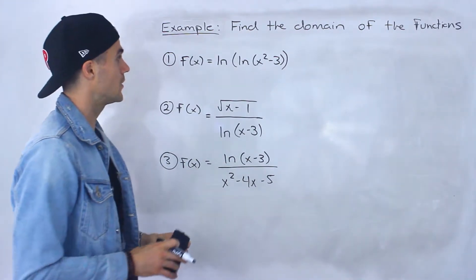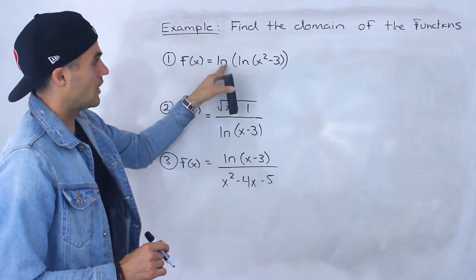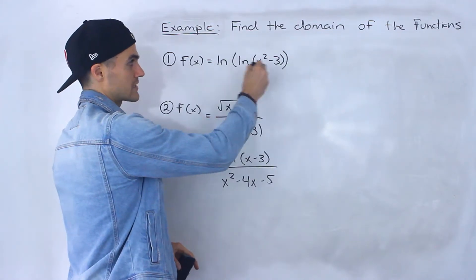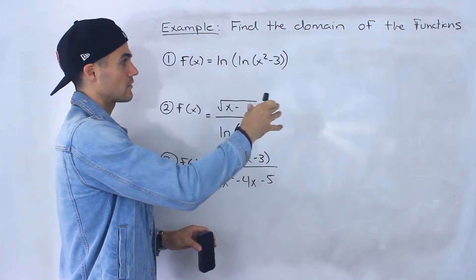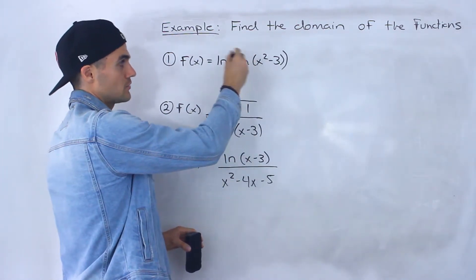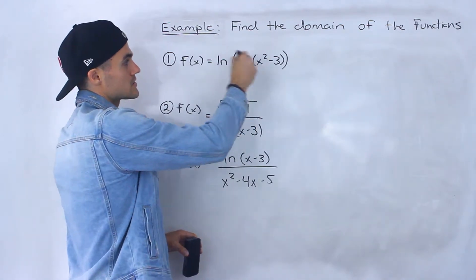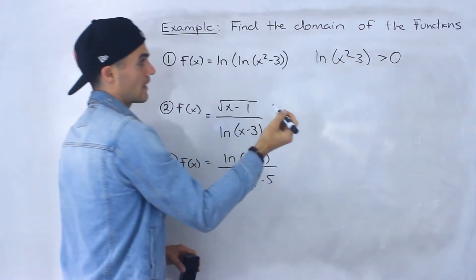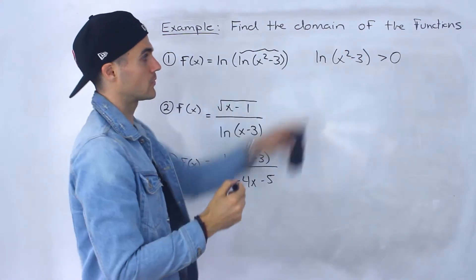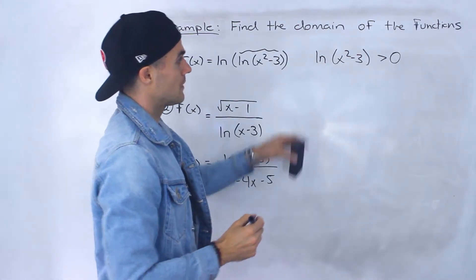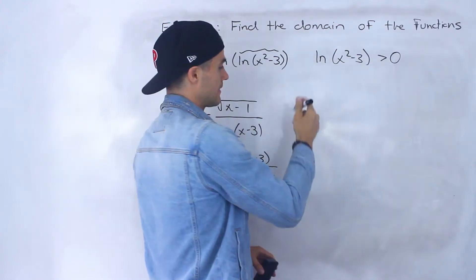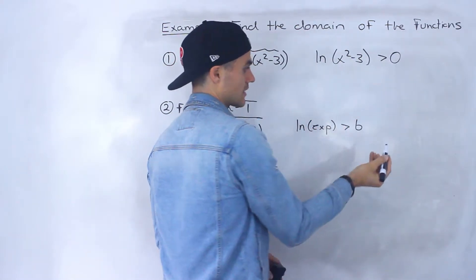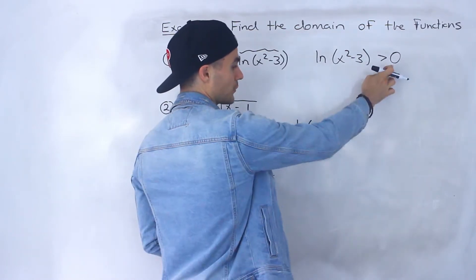Assuming you did watch that video, this first function is ln of ln of x squared minus three. Whenever you have ln of some kind of expression, you have to make sure that expression is going to be greater than zero, because you can't take ln of zero or ln of a negative number. So we need to figure out when ln of x squared minus three is going to be greater than zero — when is the expression inside the bracket going to be greater than zero? We used a property in the previous video: whenever we have ln of some expression greater than a constant, to isolate for that expression you take e to the power of that constant.